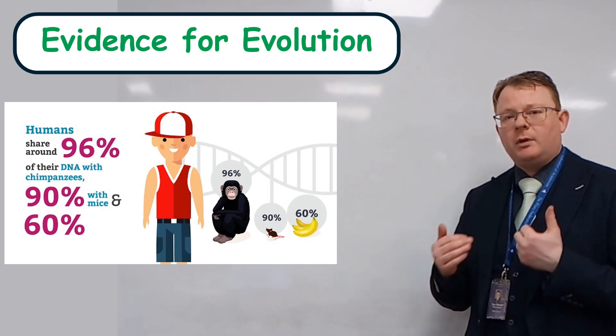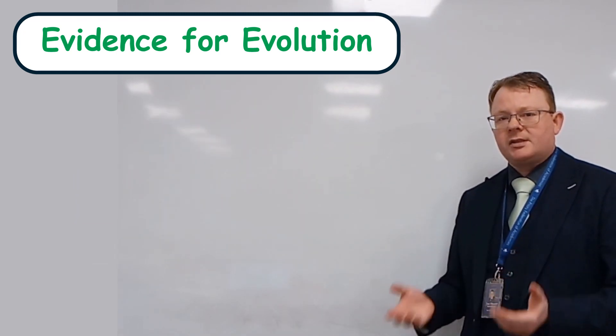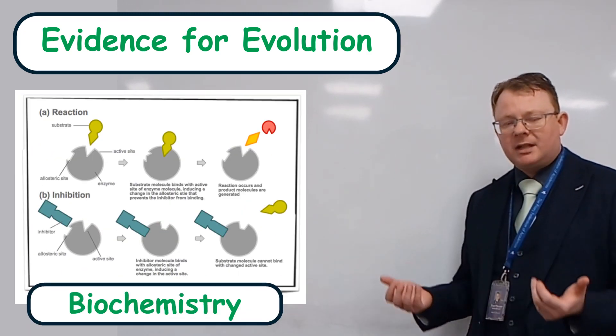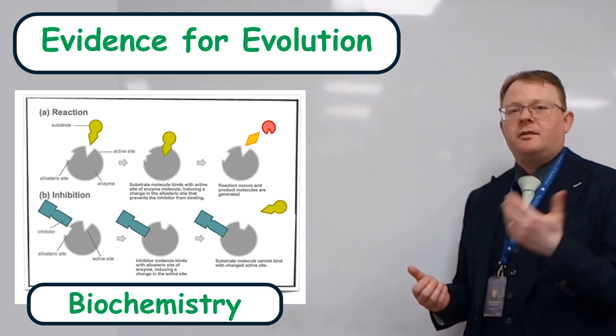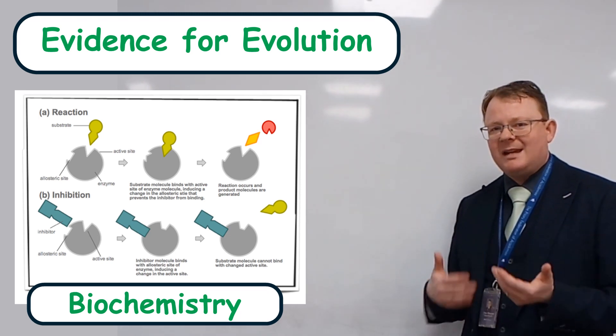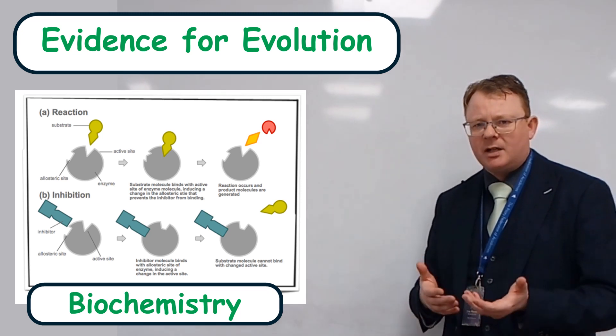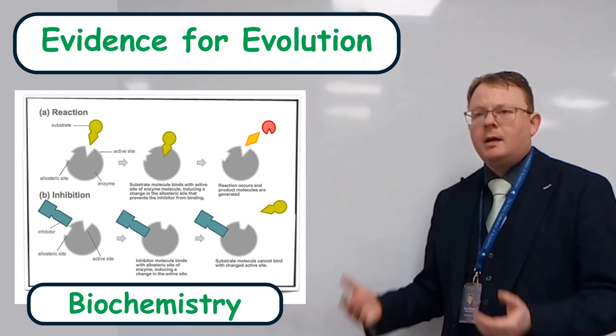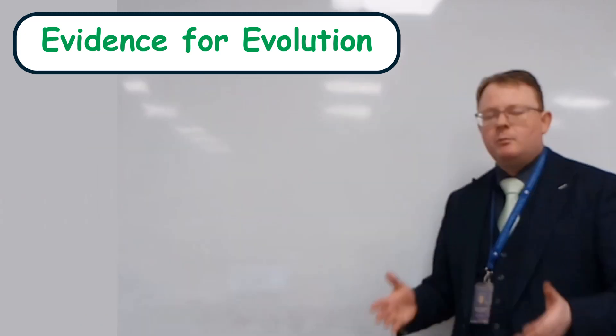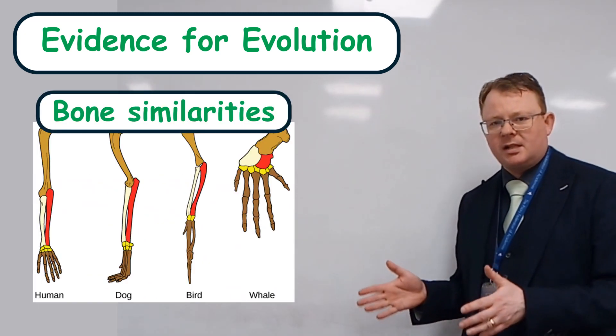We've got things like, you can go and look at the biochemistry inside of cells. So the fact that we've got lots of the same metabolic processes, lots of the same enzyme actions as other organisms, kind of implies that we must have had some sort of common ancestor at some point.